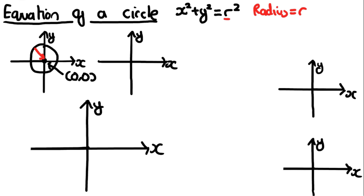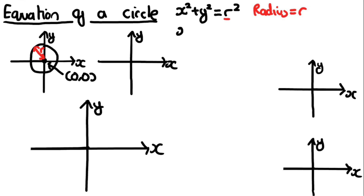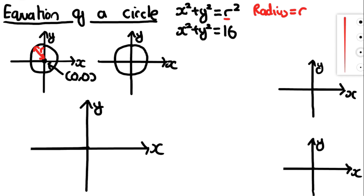Remember that the radius of a circle is a line that connects the center to any point on the circumference, and r is the length of the radius — it basically dictates the size of the circle. The square root of the number at the end is the size of the radius. For example, the graph x squared plus y squared equals 16 is a circle with its center at the origin, and the radius is the square root of 16.